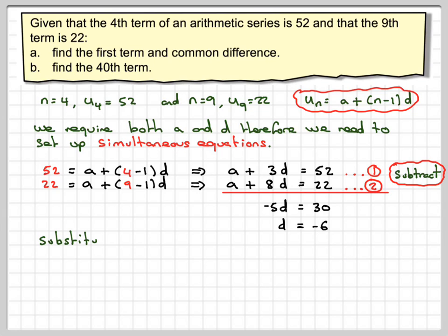So therefore, to find a, you need to substitute into one of the equations. So we'll substitute into equation 1. So we're going to have a + 3(-6) = 52.